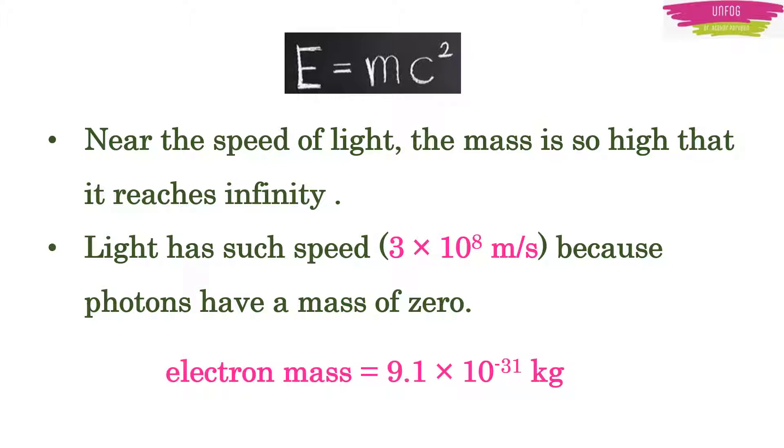Light has such speed because photons have zero mass. But we know that electrons have mass, right? So electron cannot have speed of light and therefore it won't radiate energy.